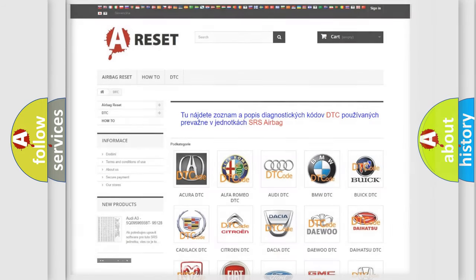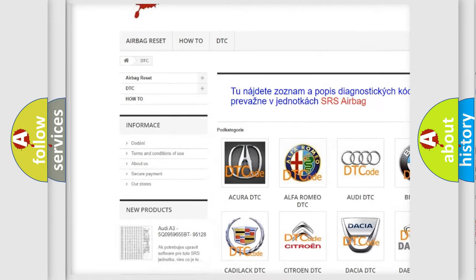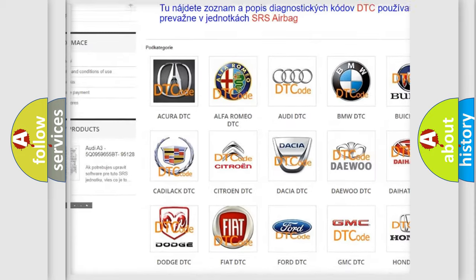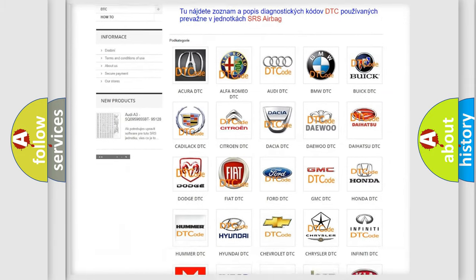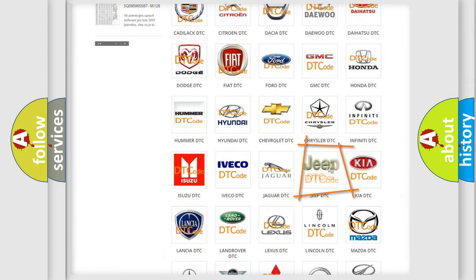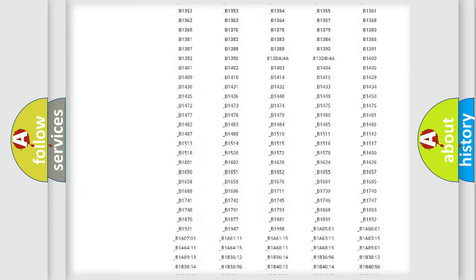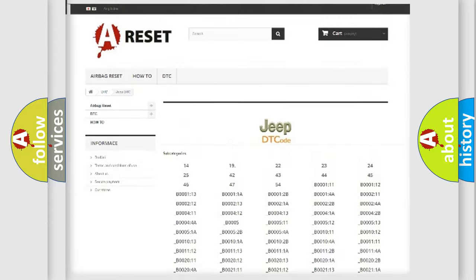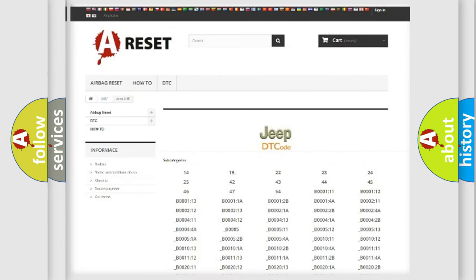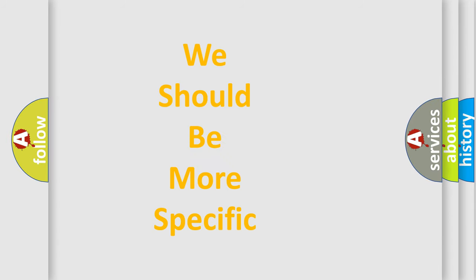Our website airbagreset.sk produces useful videos for you. You do not have to go through the OBD-II protocol anymore to know how to troubleshoot any car breakdown. You will find all the diagnostic codes that can be diagnosed in Jeep vehicles, and many other useful things. The following demonstration will help you look into the world of software for car control units.